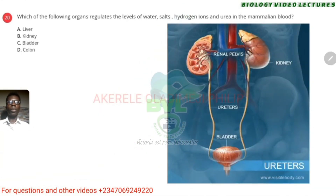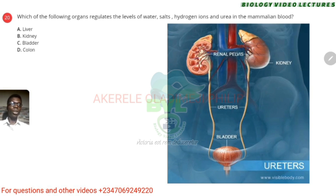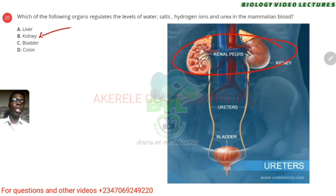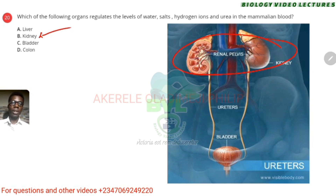Which of the following organs regulates the levels of water, salt, hydrogen ions, and urea in the mammalian body? That would be the kidney. The kidney forms part of the urinary system, or some would say excretory system.